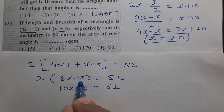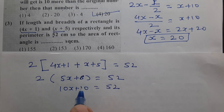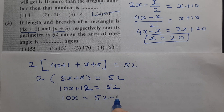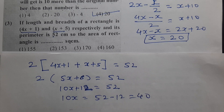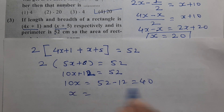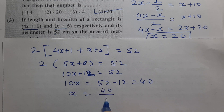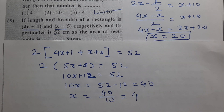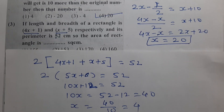Simplifying: 2 times (5x plus 5) equals 52, giving 10x plus 10 equals 52. So 10x equals 42, wait — 10x equals 40, and x equals 4. The x value is 4.